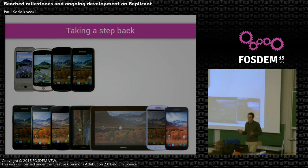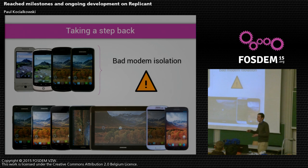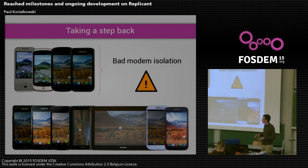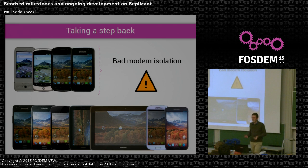So that's where we are now. If you take a step back and look at those devices we support — they all have what we call bad modem isolation. It means that on those devices, the modem, which is always connected to the mobile telephony network and running non-free software, has access to the rest of the device to a certain extent. We know that on the Nexus S and Galaxy S, it can read and write the RAM. And that's very bad.